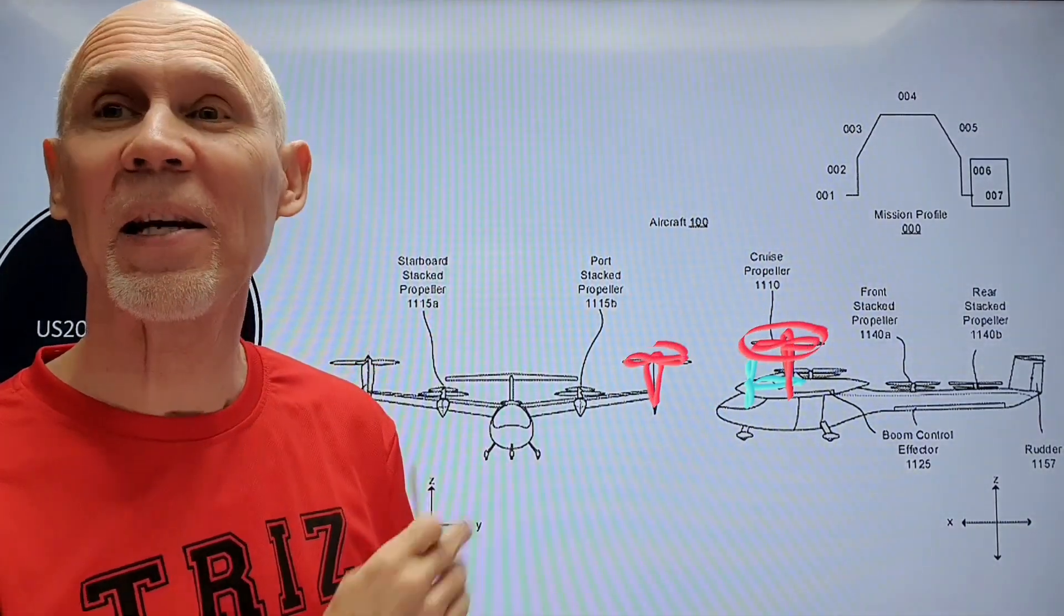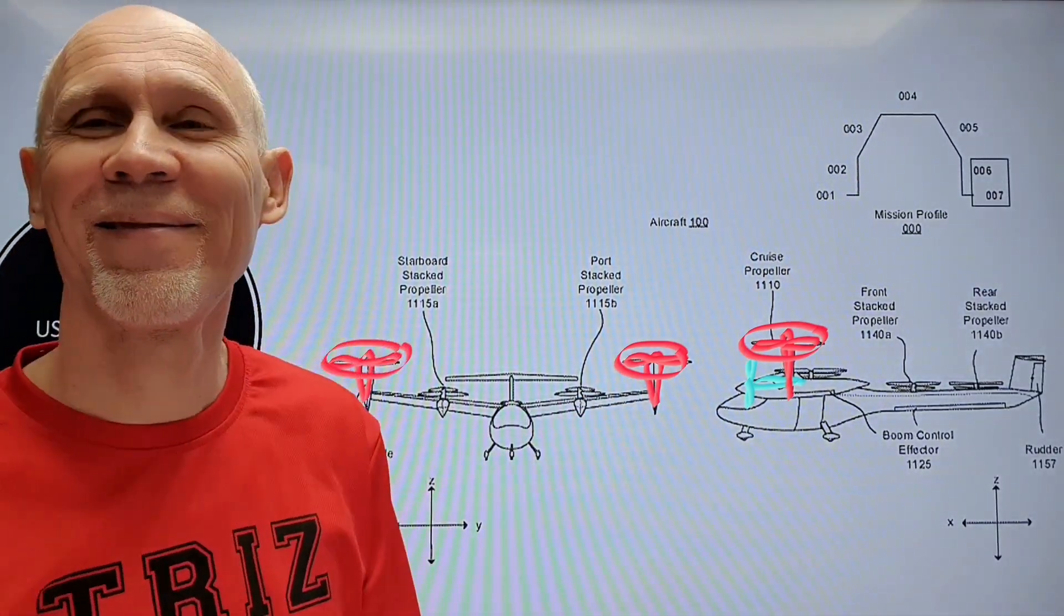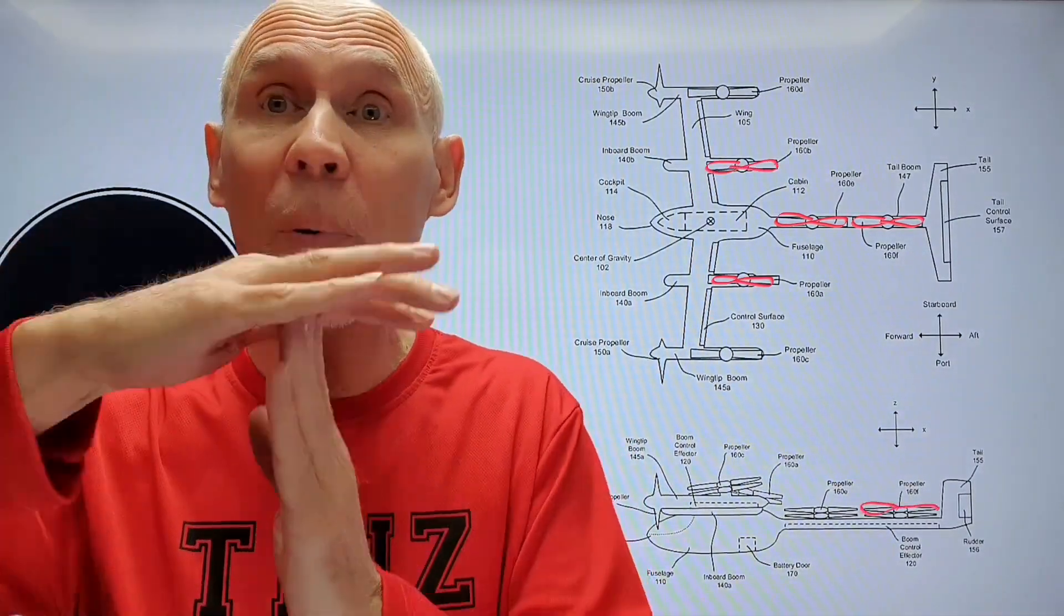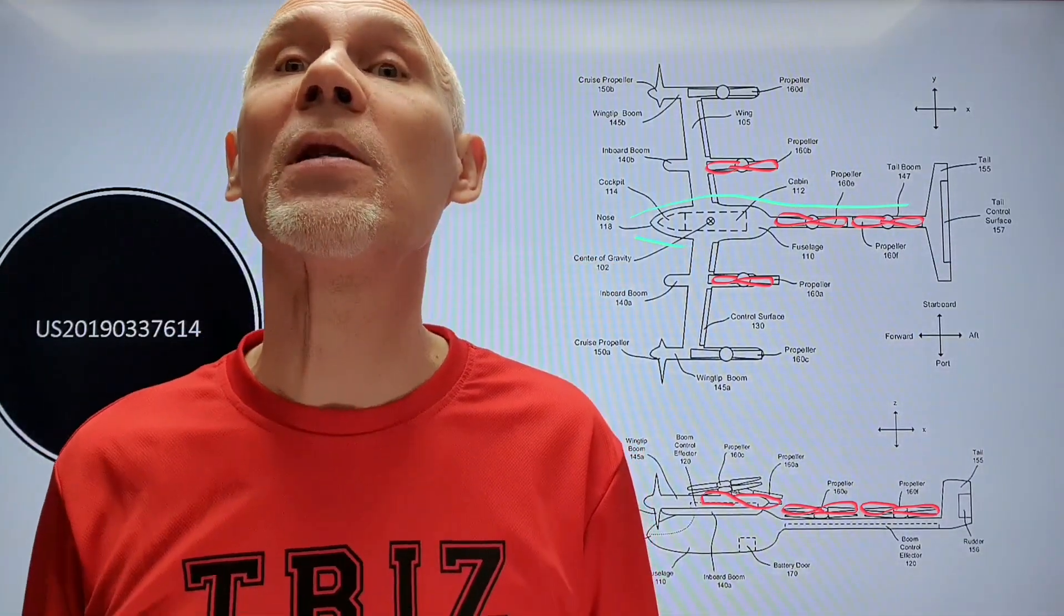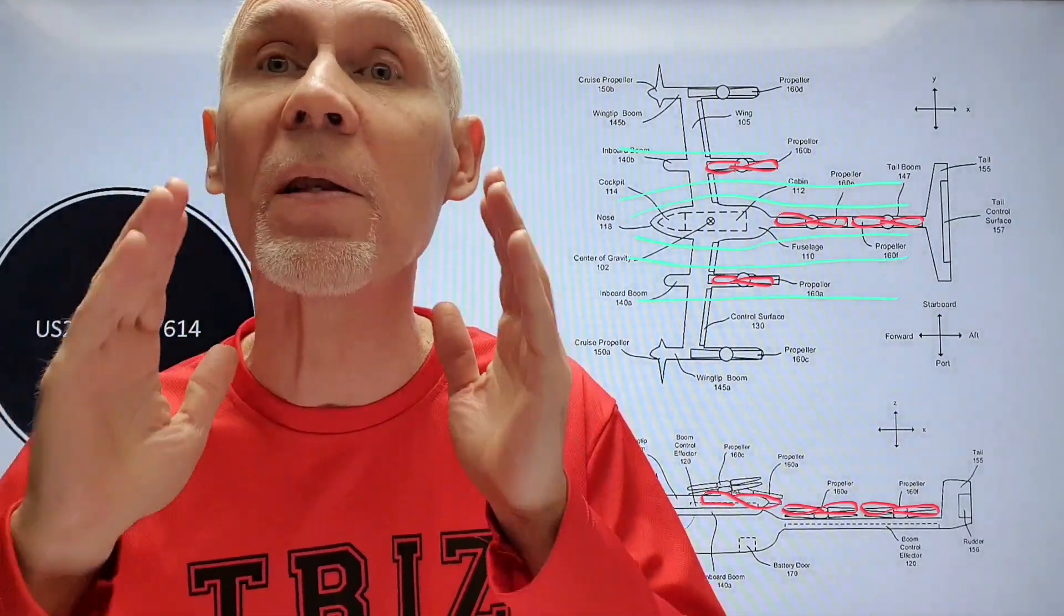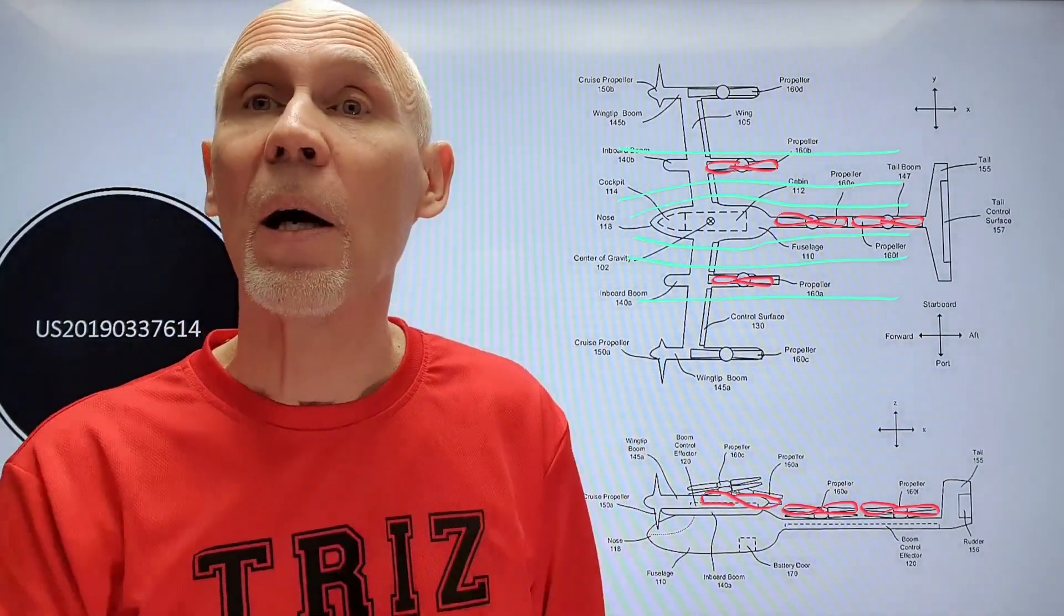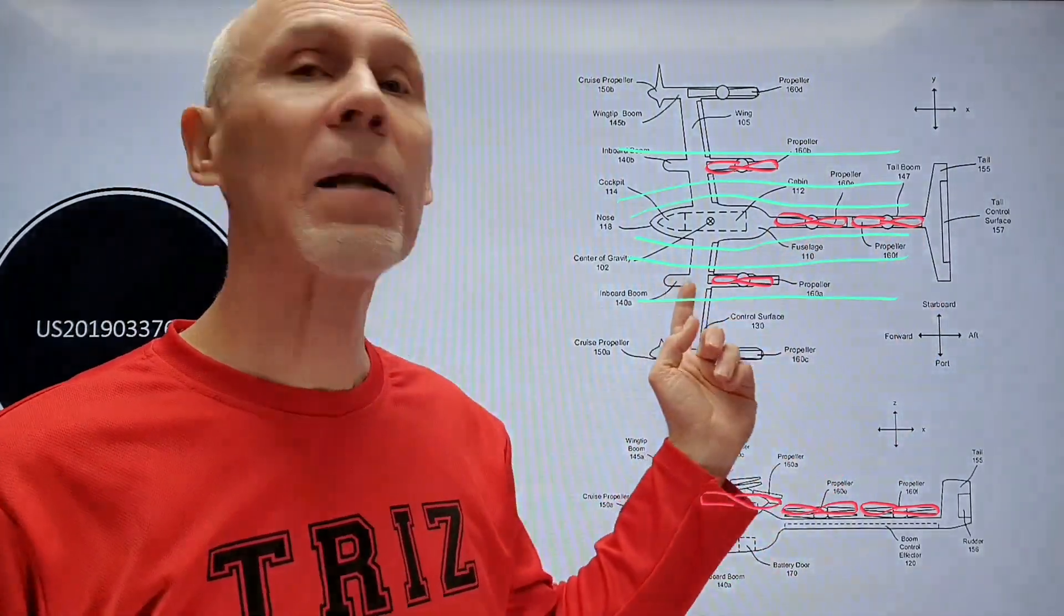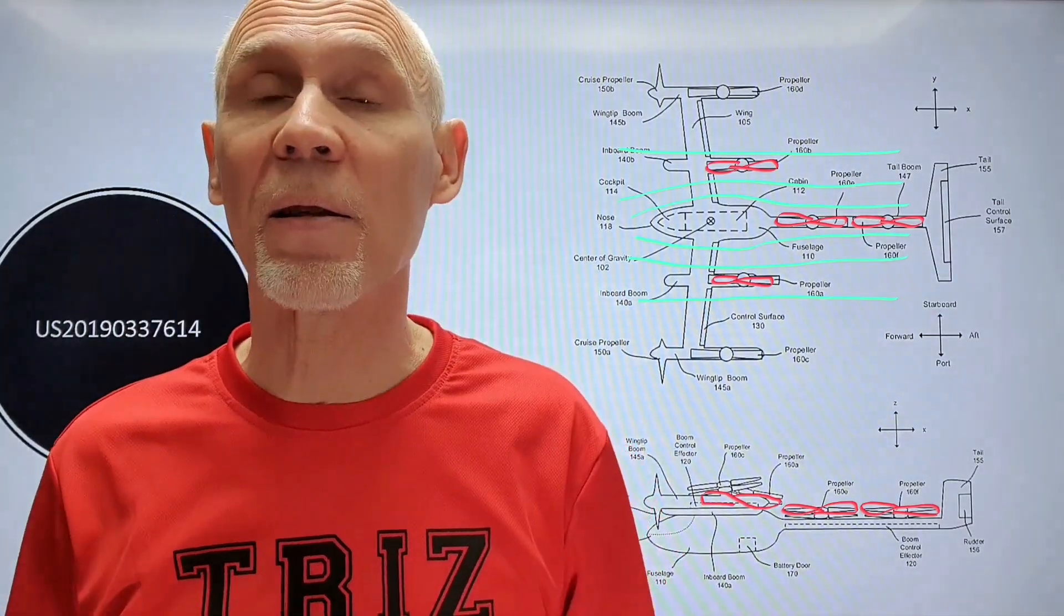Also, inventors attacked another problem. They thought that horizontal propellers will have too high aerodynamic drag during the horizontal flight. That's why inventors proposed the following solution: after takeoff, these propellers will be stopped and positioned along the tail and wind boom, so they will reduce air resistance.